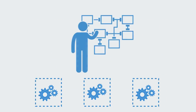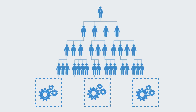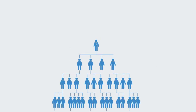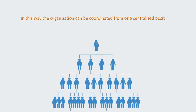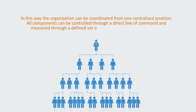This breaking down of the system into individual components then inevitably requires us to put all the parts back together so as to achieve the end product or result. In order to achieve this, traditional organizations build up a hierarchical pyramid, at the top of which is one or a small group of elements responsible for integrating the whole system. Below this are positions responsible for managing the primary domains of the organization, and further down, more people are responsible for more specialized areas, each level responsible for the integration of different functions beneath it. In this way, the organization can be coordinated from one centralized position, with all components controlled through a direct line of command and measured through well-defined metrics.